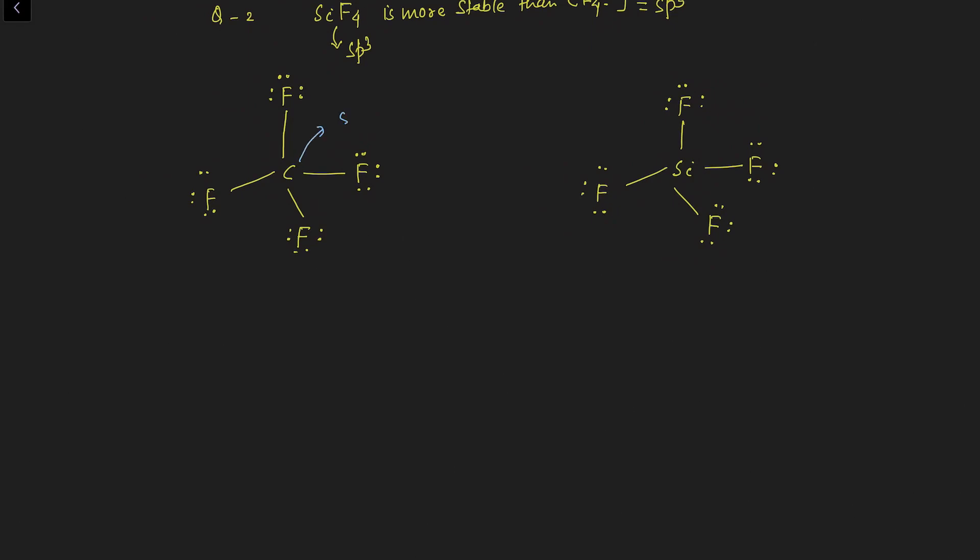When you check the hybridization of the central atom, silicon is sp3 hybridized and carbon is also sp3 hybridized. Even the fluorine atoms in both SiF₄ and CF₄ are sp3 hybridized, which will be important later. Before making any conclusion, look at the configuration of the central atom.